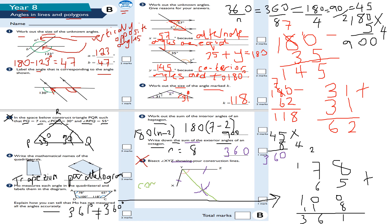Use your protractor, ruler, and pencil. Question five is called constructing triangles, and question nine is what we call angle bisection — or angle bisector. You are cutting the angle in half so it's the same size on both sides. Bisecting means to cut in half — you cut the angle in half exactly, hence why it's called angle bisection.